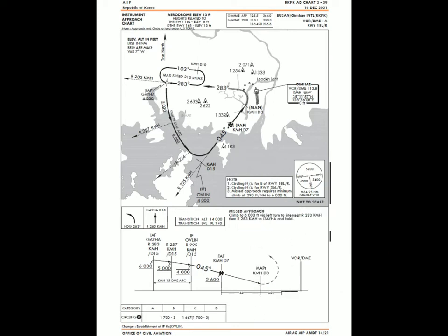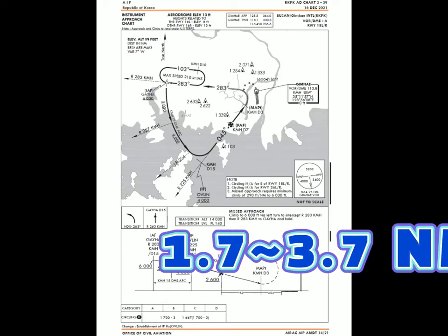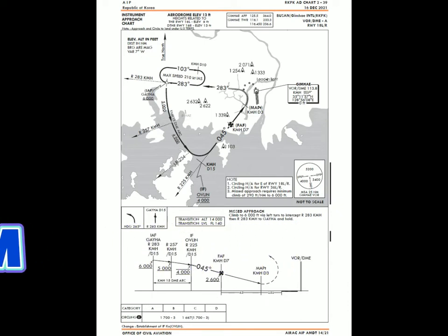Circling radius should be between 1.7 miles and 3.7 miles for Category Charlie and Delta aircraft on runway 18R. Therefore, maintaining a wider downwind leg gives more room for the pilots. However, due to the mountains on the downwind leg, approximately 2.6 miles is the best in my experience.